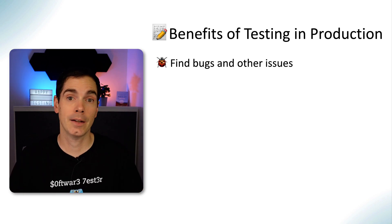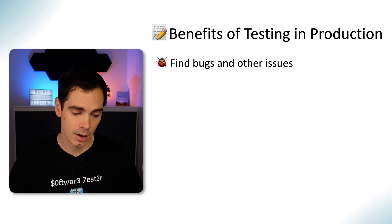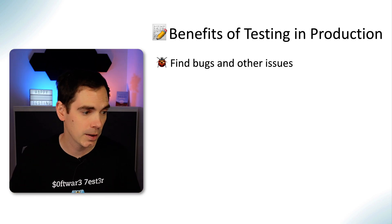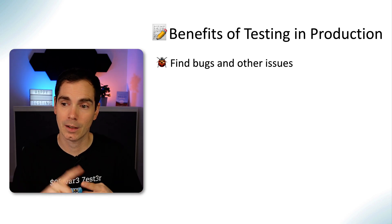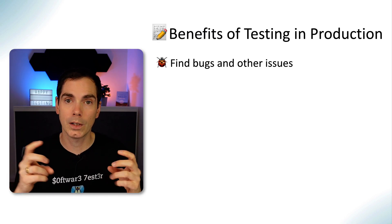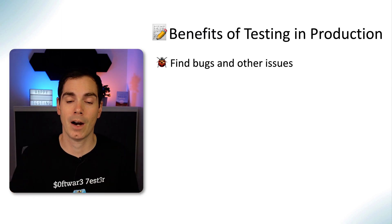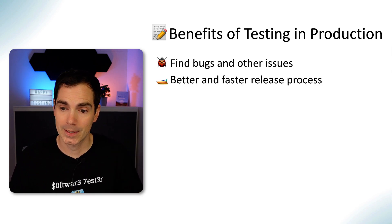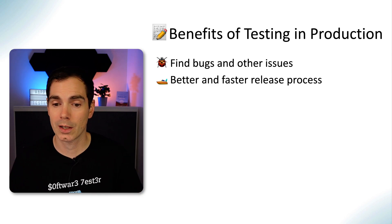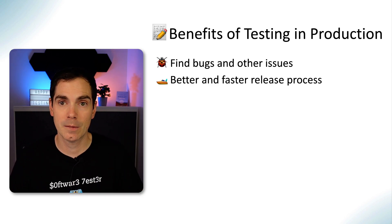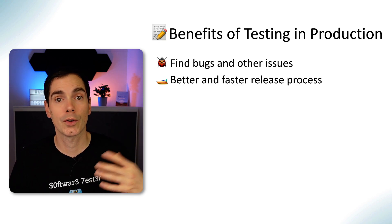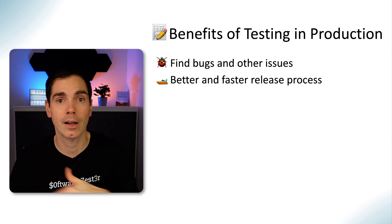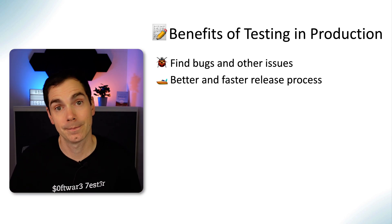What are the benefits of testing in production? Finding bugs and other issues — the more you test, the more you can find and report. But as mentioned, finding bugs should happen first on pre-production environments since those are safer. Another benefit is a better and faster release process: with a fast feedback cycle, you can do more intensive testing in production — if you find something, the developer fixes it and you iterate quickly.